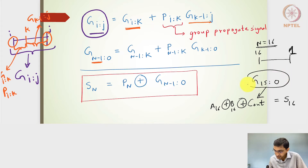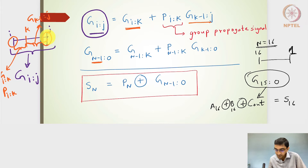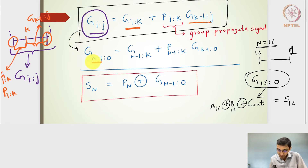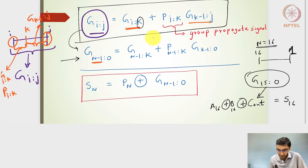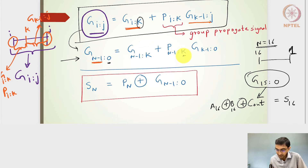To get the group generate G(15:0), I can demarcate the group of bits with a K value, where K lies between 1 and j inclusive. Using this expression, with K in between n-1 and 0, I get G(n-1:k) + P(n-1:k) · G(k-1:0). For example, if K=8, then K-1 will be 7, giving G(15:8) + P(15:8) · G(7:0).